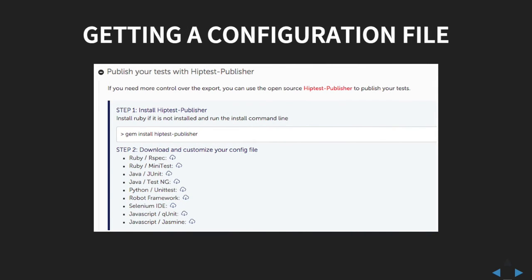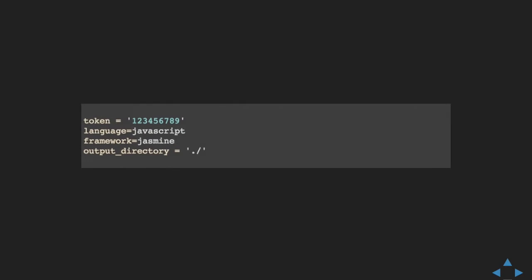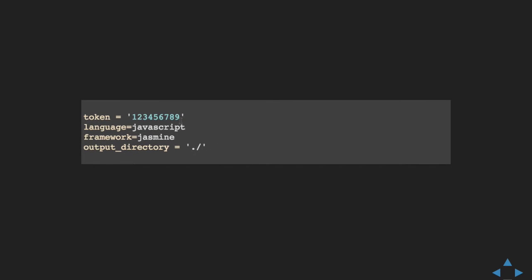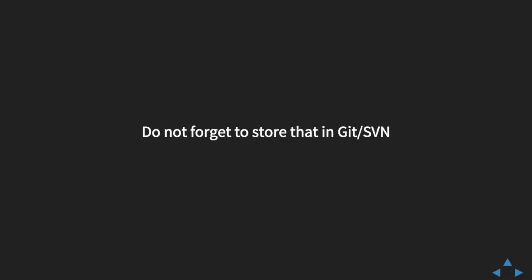To solve this issue you can use a configuration file. To ease the process, we've integrated the generation of a skeleton configuration file directly inside HipTest. It's available in the exports tab under the 'publish your tests with HipTest Publisher' section — you can see cloud icons that generate a configuration file for your project that you can tweak later. You'll get something like: the token, the language and framework you use, and where the tests are exported. Once you get this file, save it in your code repository — git, SVN, Mercurial, whatever you use. This way, every developer and tester running HipTest Publisher with this configuration file will have the same configuration.